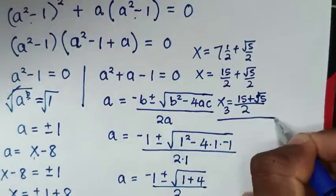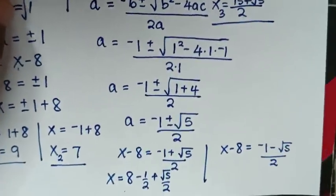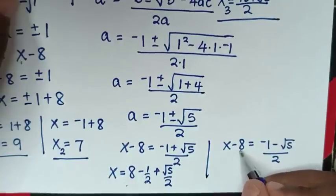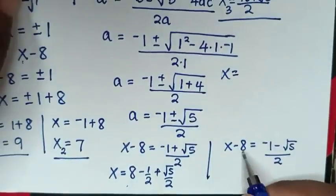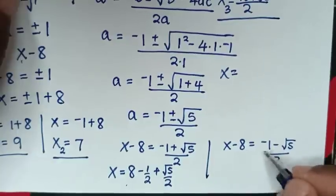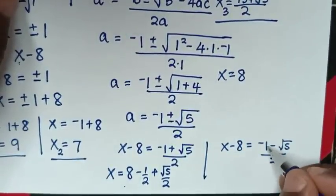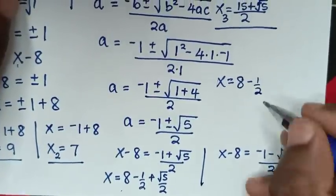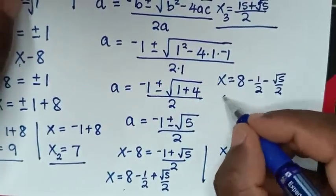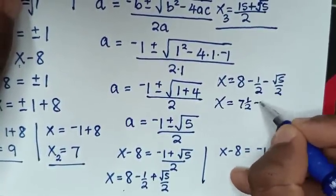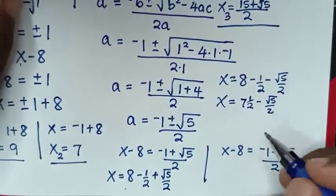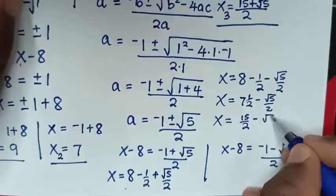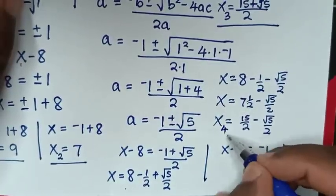This is the third value of x. For the fourth value of x, taking negative 8 to the other side from the negative case: x equals 8 plus (negative 1 minus square root of 5) over 2. Then 8 minus one half is 7 and one half, minus square root of 5 over 2. Converting: 15 over 2 minus square root of 5 over 2. So x₄ equals (15 minus square root of 5) over 2.